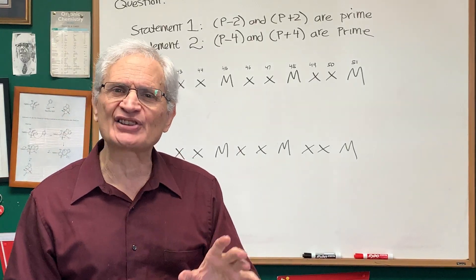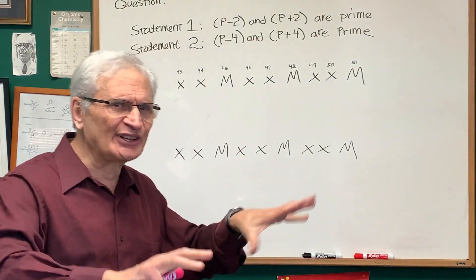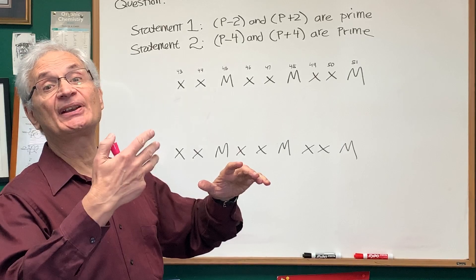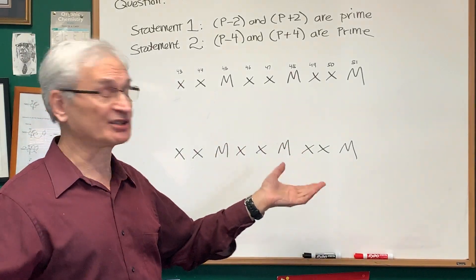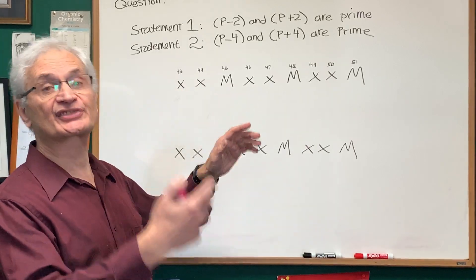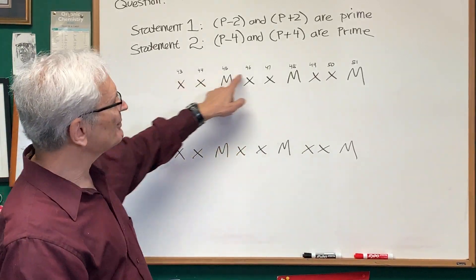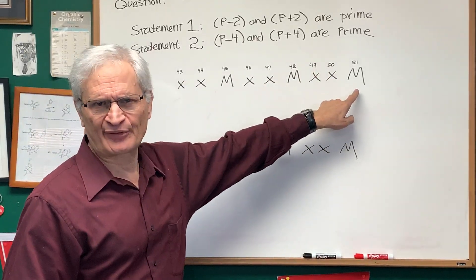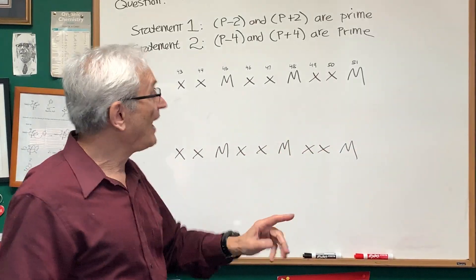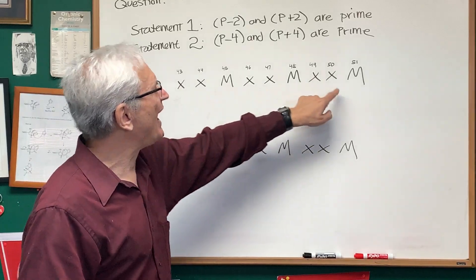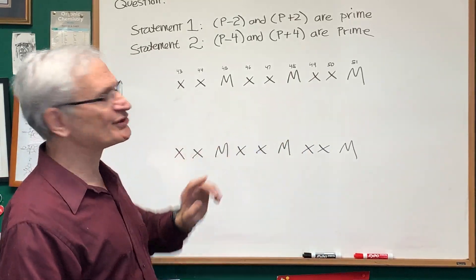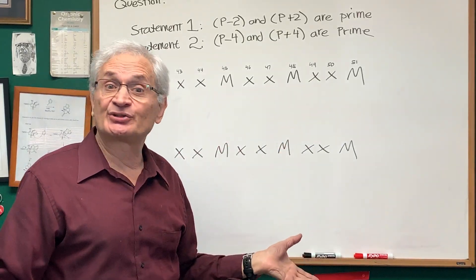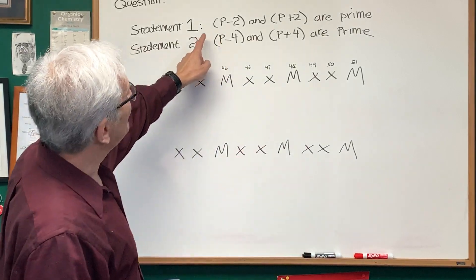The secret lies in the three times table — it's like a filter for all non-primes. In the three times table, every third number on the number line is a multiple of three. I've written some two-digit numbers on a diagram here. The values labeled M are the multiples of three — they cannot be prime. The numbers in between I've marked as X, representing the possible prime numbers.